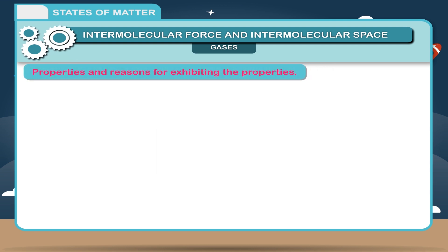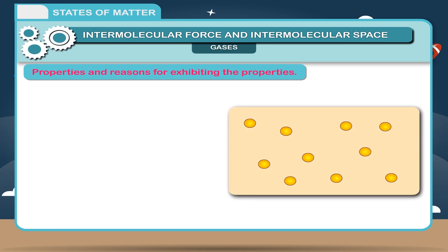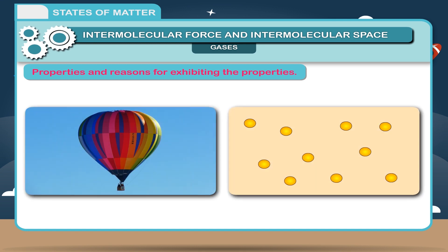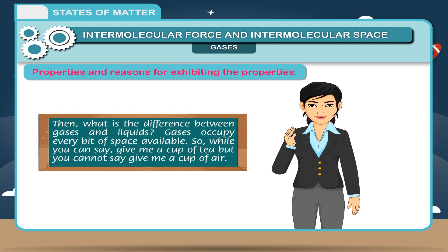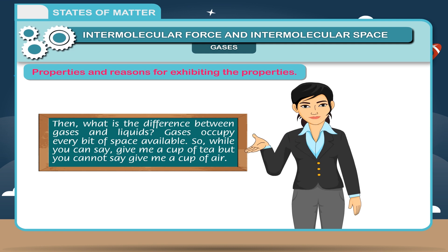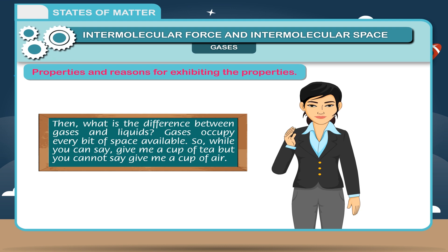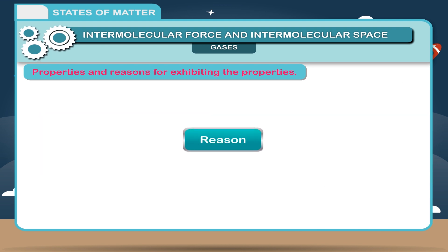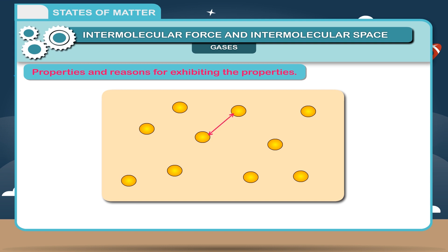Properties and Reasons for Exhibiting the Properties. Gases have no definite shape. They take the shape of the containing vessel. Then, what is the difference between gases and liquids? Gases occupy every bit of space available. So, while you can say, give me a cup of tea, but you cannot say, give me a cup of air. Reason: As there is negligible or very less attraction between gaseous molecules, they move anywhere.